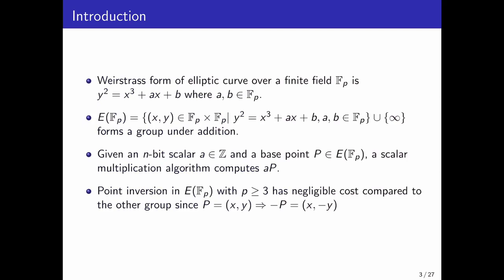We know the Weierstrass form of elliptic curves over a finite field is of the form y squared equals x cubed plus ax plus b. The points that satisfy the Weierstrass curve, along with point at infinity, form a group. A scalar multiplication algorithm computes a times P for a given n-bit scalar a and a base point P on an elliptic curve. The key advantage of using an elliptic curve is it has negligible cost for point inversion.